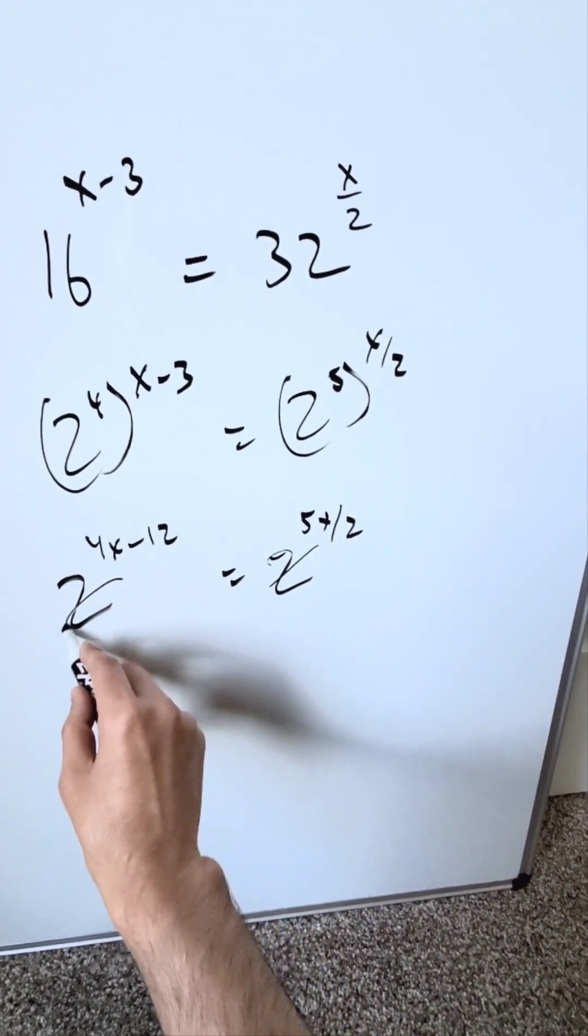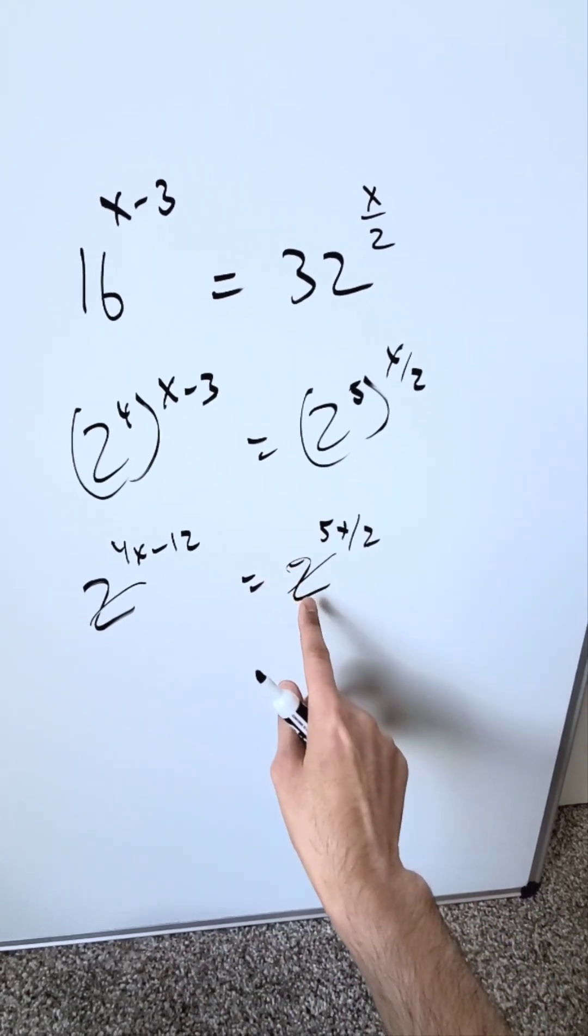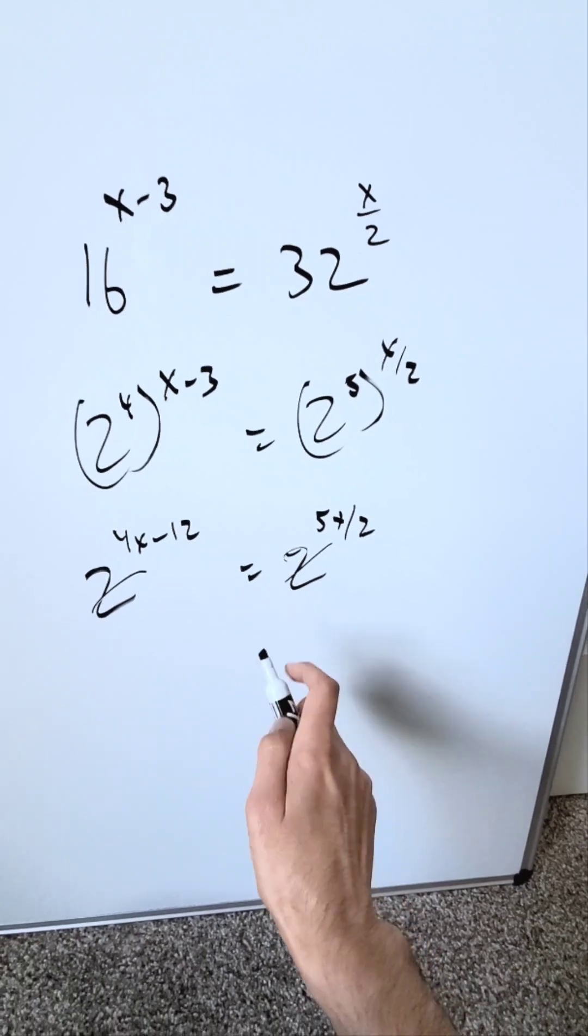Now, you can literally cancel these bases out. If you were to bring in the properties of logs, make these exponents into coefficients, these natural log 2s which would arise would cancel out anyways.